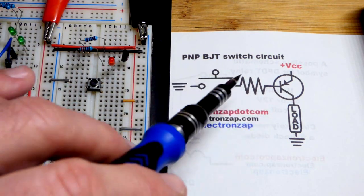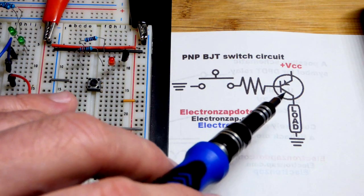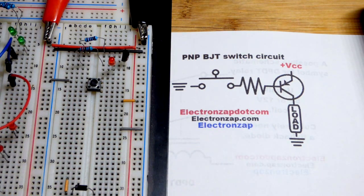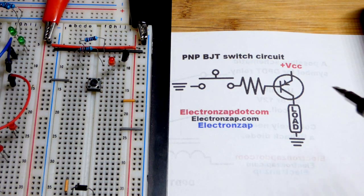Since this is a PNP bipolar junction transistor circuit, I assume you already understand the NPN, and usually people study the NPN before the PNP.